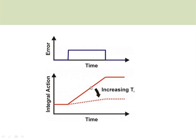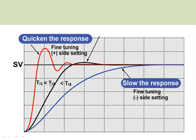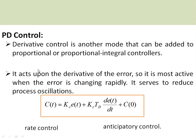A larger Ti results in lower integral action output, while a smaller Ti results in higher integral action output. This can be better understood from this figure showing three process responses with three different integral times: Ti1, Ti2, and Ti3. Ti1 is the smallest, so the integral action is fastest, but it introduces overshoot. Ti3 is the largest integral time, giving no overshoot but a very slow process response. The optimum value is selected through a process known as controller tuning.